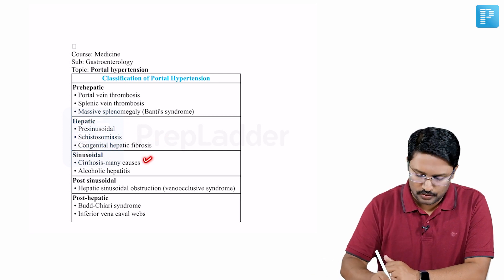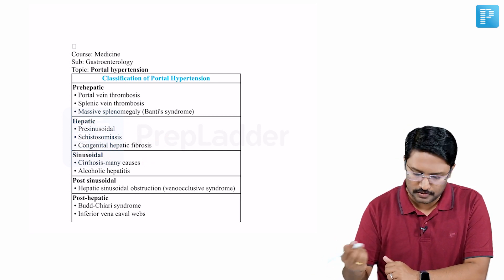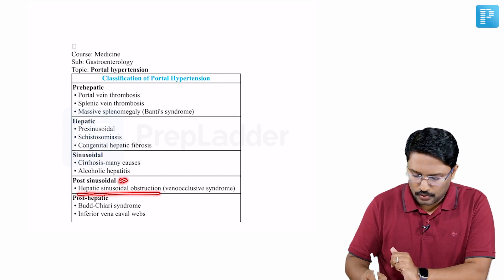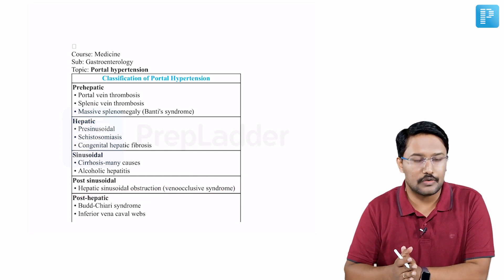Sinusoidal - obviously cirrhosis, whatever could be the cause for cirrhosis, or alcoholic hepatitis. Now post-sinusoidal: hepatic sinusoidal obstruction or what you call as veno-occlusive syndrome.